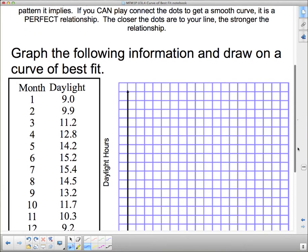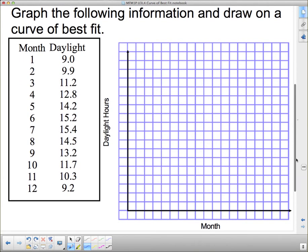So, now here's another one. Graph the following information and draw on a curve of best fit. So, we're going to look at the months of the year versus the number of daylight hours there are. So, the months of the year, and this would be January and February and March and April, etc. Okay? We're going to put them on here. And then we're going to graph these points. Now, I'm going to pause this and put them on. And you can see, and you can do the same thing. Actually, maybe we should talk about the scale first.